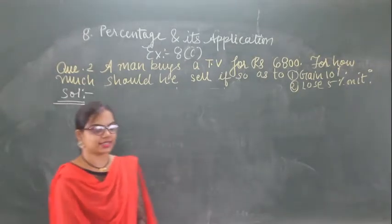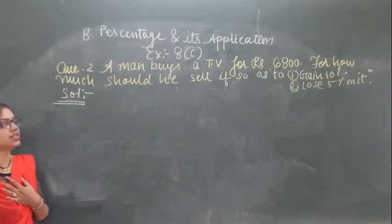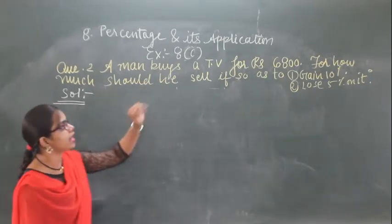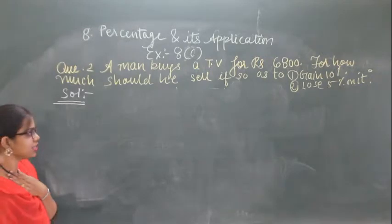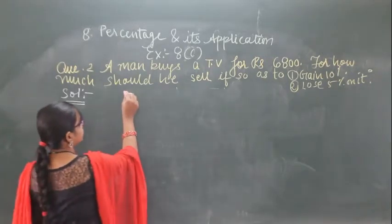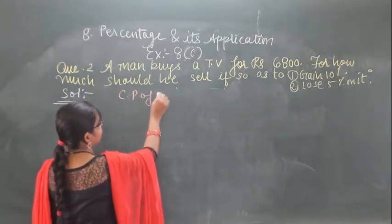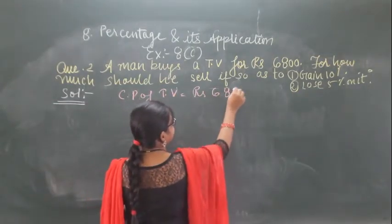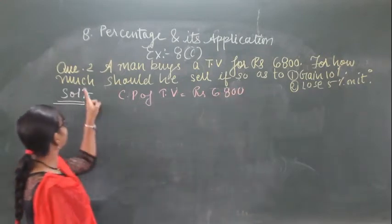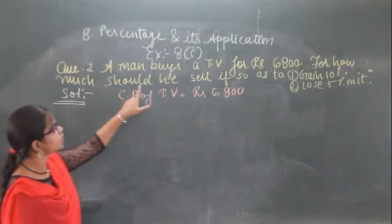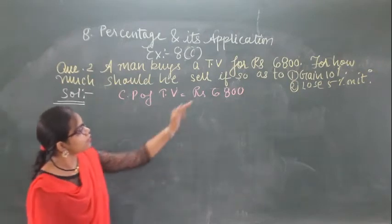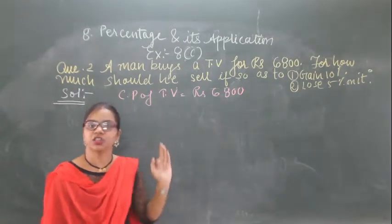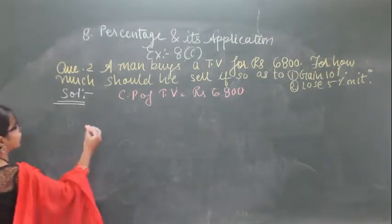Today we are going to start exercise 8c. In the second question, a man buys a television for rupees 6800. The cost price of the television is rupees 6800. We have to find out for how much should he sell it, given that he gained 10% gain and 5% loss in the two conditions.